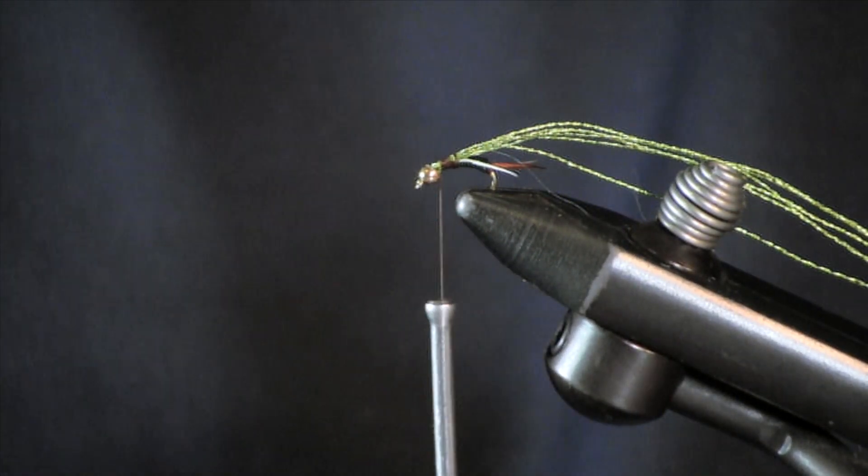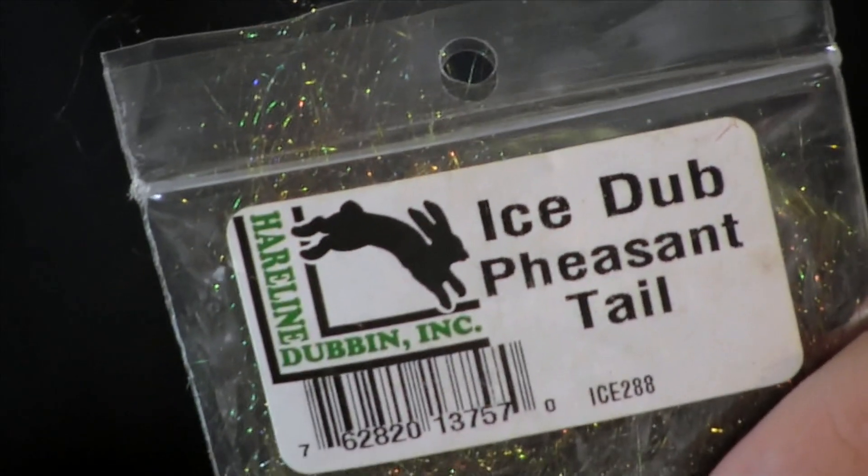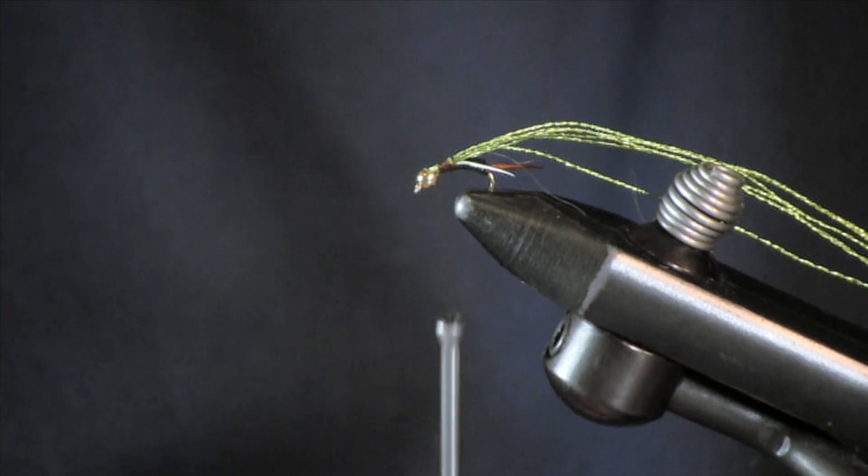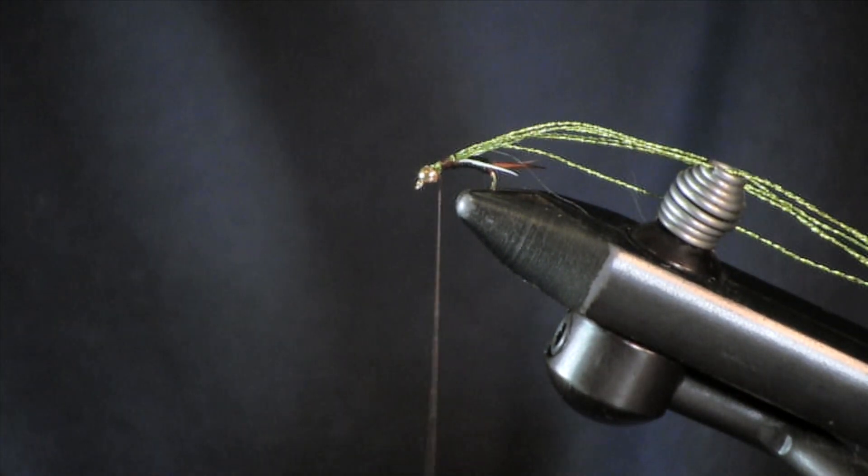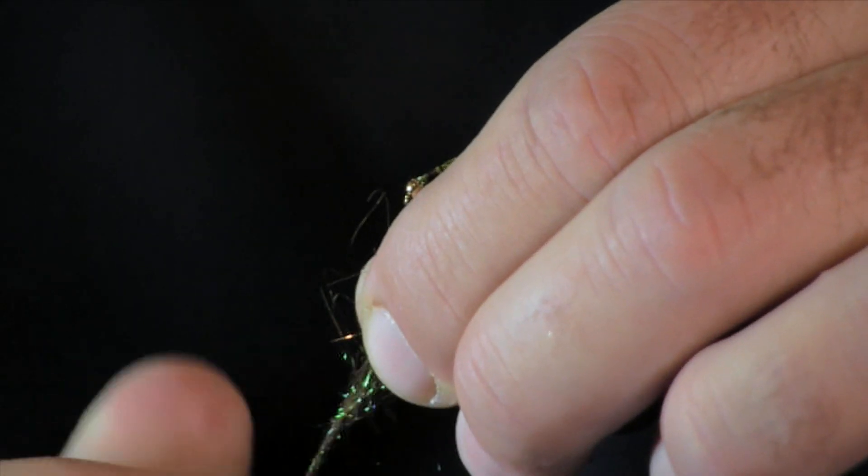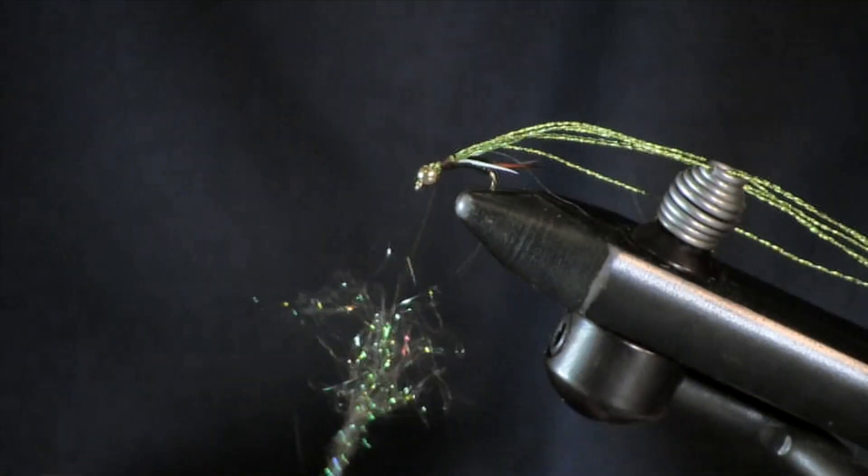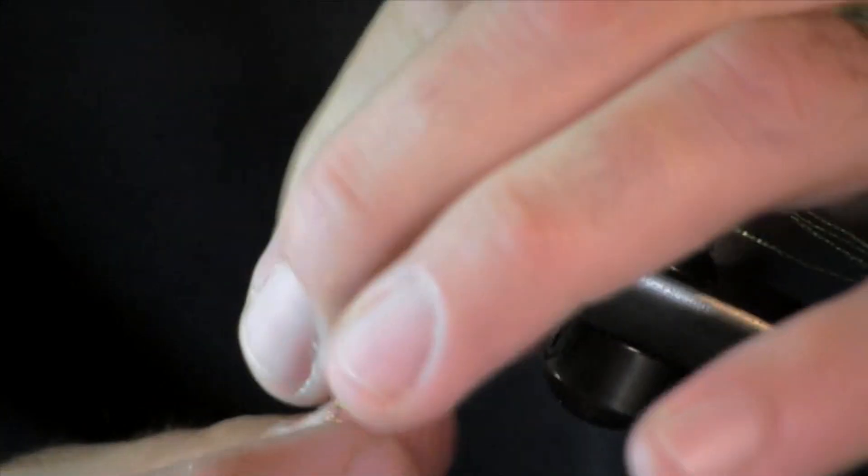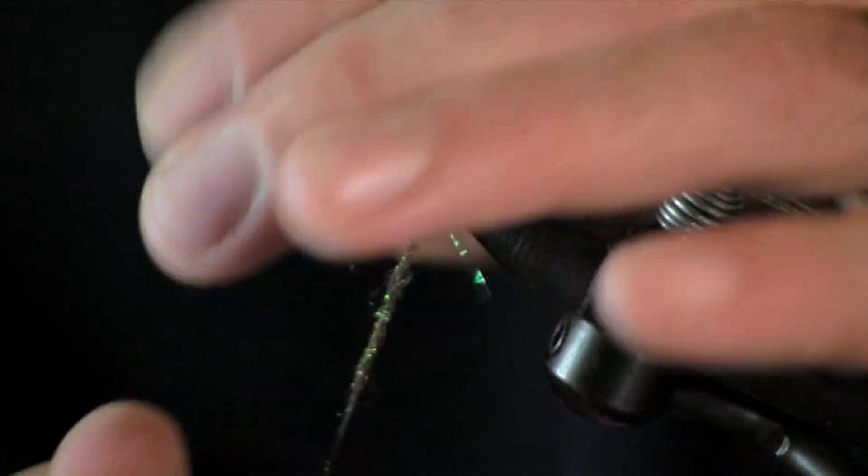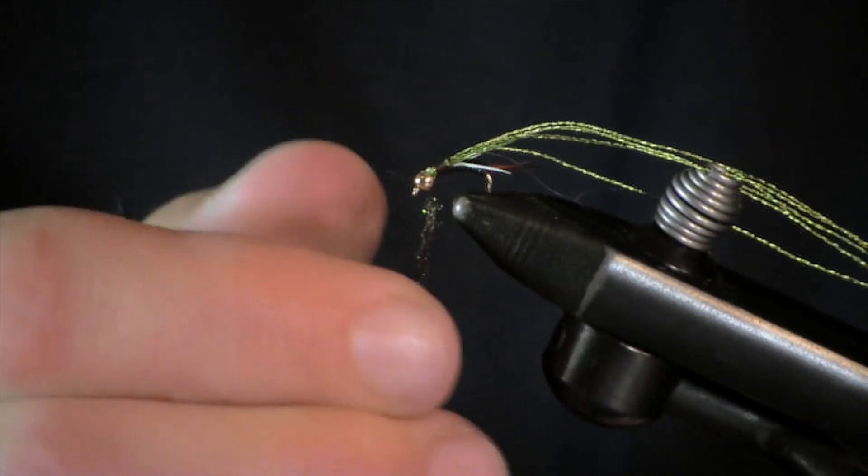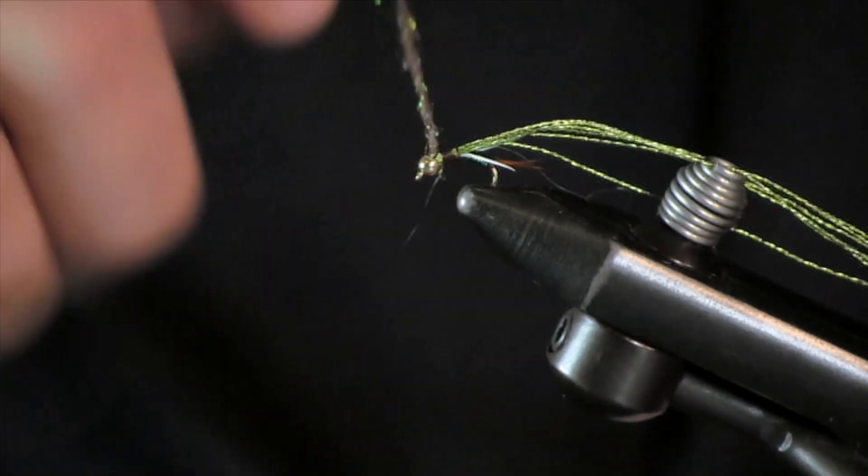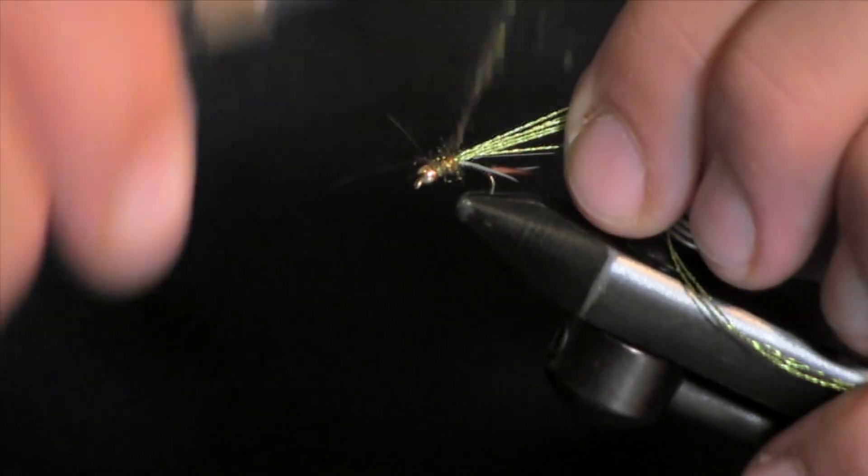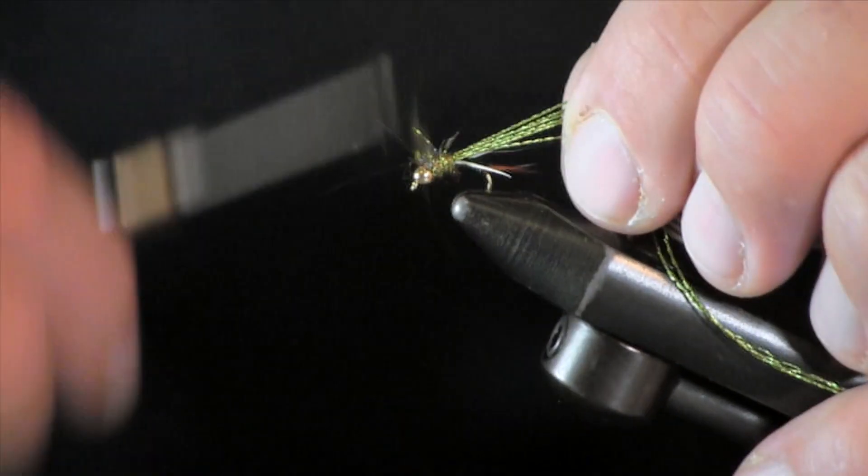Then we are just going to leave it hanging off the back here. Now the next thing I want to use is some Peacock Pheasant Tail Ice Dubbing. This is what I like to use on this fly. Just going to put a little bit of dubbing here. You don't want this to be too thick. Remember you are making a skinny fly here. This isn't a big meaty fly.